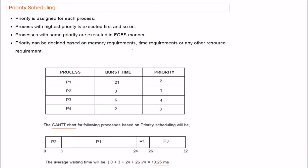Priority Scheduling assigns a priority number to each process. The process with the lowest priority number has the highest priority and is executed first. If two processes have the same priority, they are executed in FCFS order. Priorities are decided based on memory requirement, time requirement, or other resource requirements.